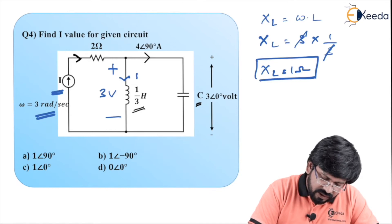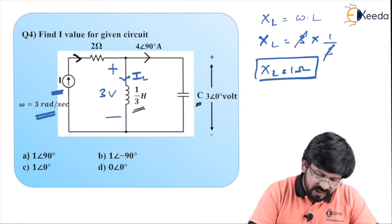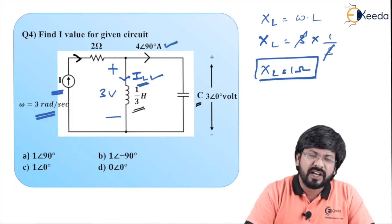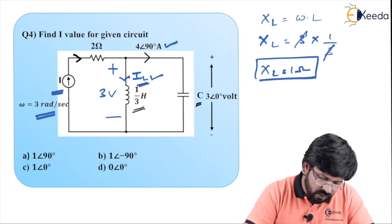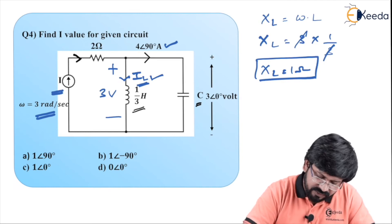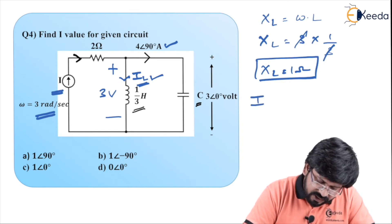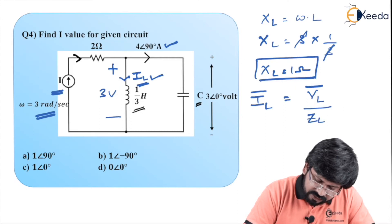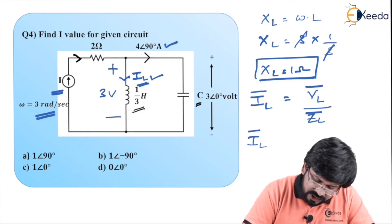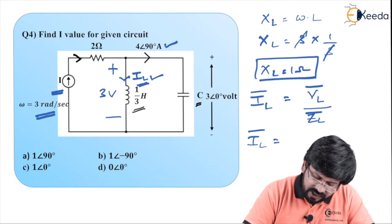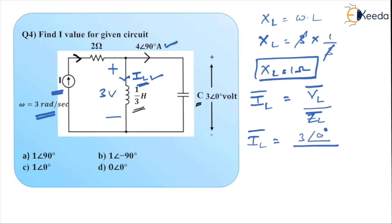If I manage to get the current through L, everything becomes easy because the current through the capacitor is already known. Current through L and current through C can be vector-added to give total current I. Current I_L equals voltage across L divided by Z_L. That is 3∠0° divided by X_L∠90°, which is 1∠90°. So I_L vector equals 3∠−90° ampere.